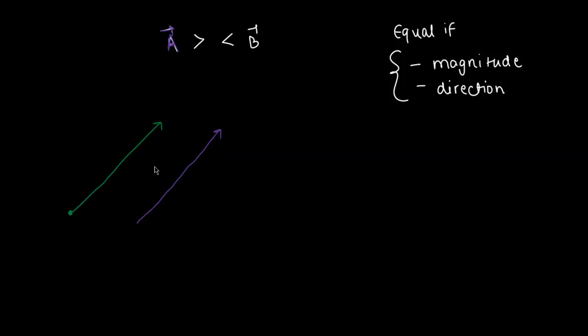So you could have something like this. And all of these will be equal, and all of these are same, there is no difference between these vectors, as long as you're keeping the magnitude and direction same, you can really just translate the vector.